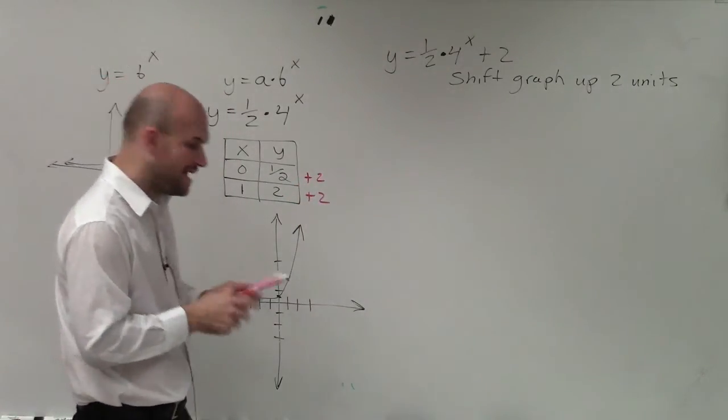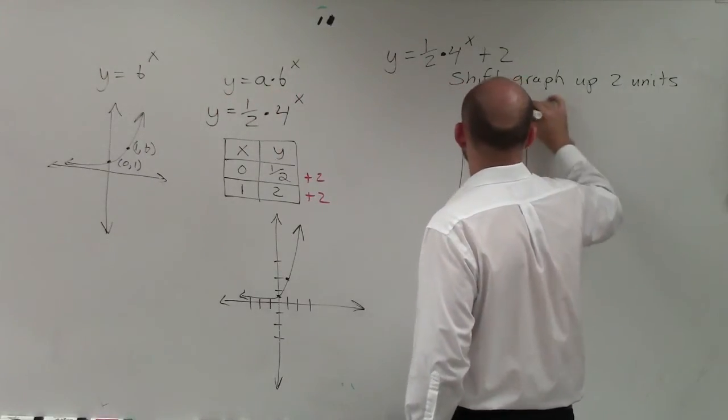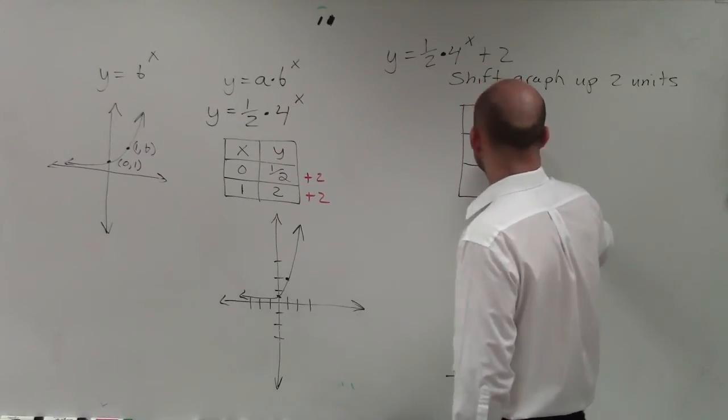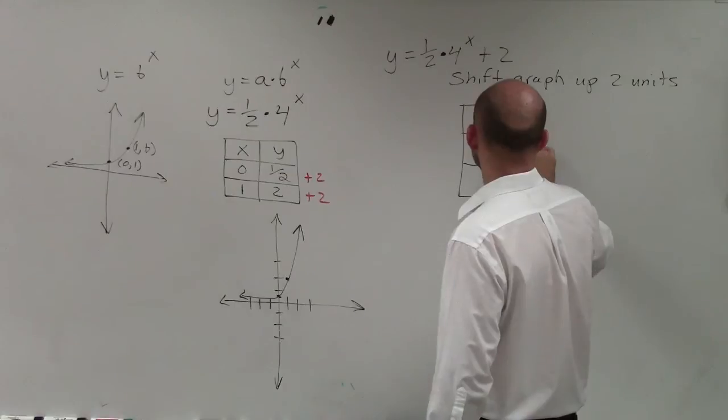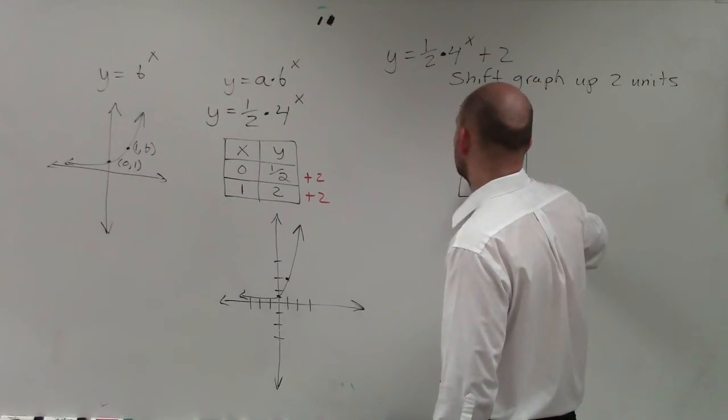So therefore, my new table is going to be at 0, 2 and 1 half, and at 1, 4.